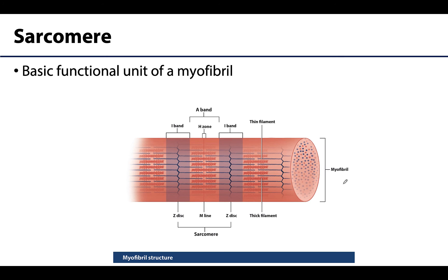These structures are organized into basic functional units called sarcomeres. On each end of a sarcomere you will have a Z-disc — plate-like regions of protein to which the thin filament is attached. A sarcomere extends from one Z-disc to the next. How much overlap there is between the thin filament and the thick filament will depend on whether the muscle is relaxed, stretched, or contracted.